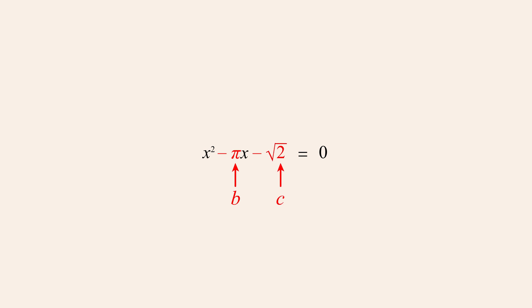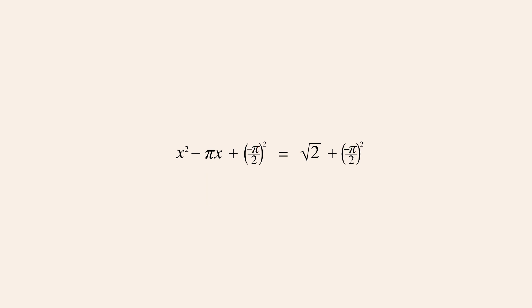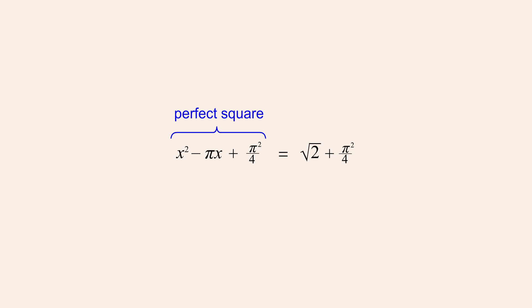Once again, we start by moving the constant term c to the right side by subtracting it from both sides, and then add b over two-squared to both sides. Then, to simplify these expressions a bit, instead of squaring the entire fraction negative pi over two, we can square the numerator and denominator separately. The quadratic expression on the left is now a perfect square that can be written as x plus b over two-quantity-squared. And since in this example b is negative pi, the perfect square quadratic can be written as x minus pi over two-quantity-squared.